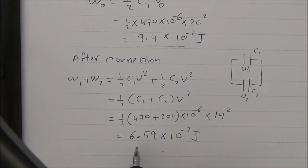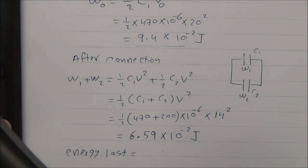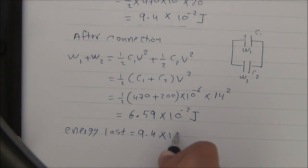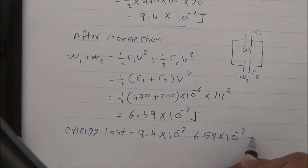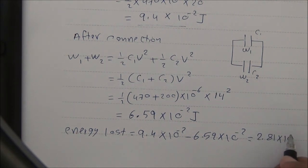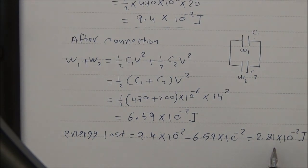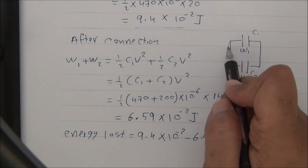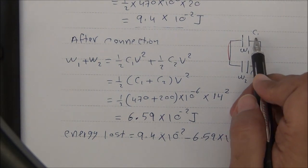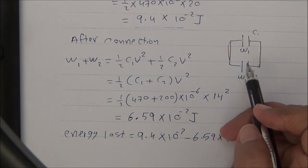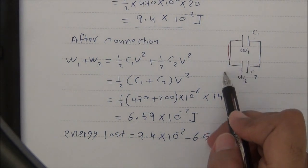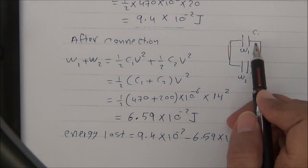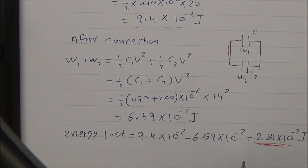The energy lost = 9.4 × 10⁻² − 6.59 × 10⁻² = 2.81 × 10⁻² joules. This energy is lost as heat in the wire and as electromagnetic radiation, because charges are transmitted from one capacitor to the other. I hope you understand this question — thank you.